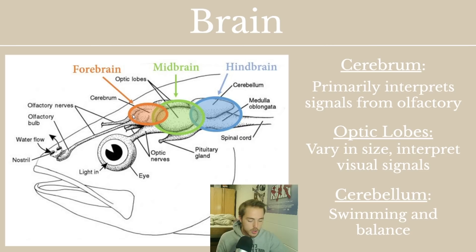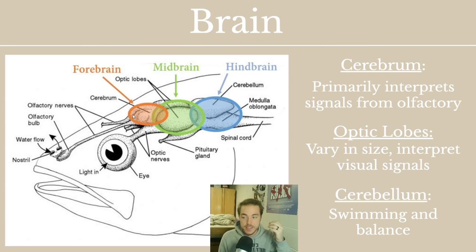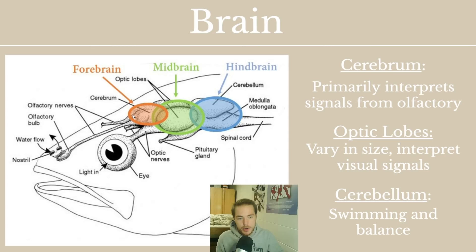This is a common theme with sensory that you need to understand. When you talk about sensing things — smell, sight, taste — there is an organ receiving the signal, and then that signal is put into a form the brain can understand and interpret. The eye just takes in light, and the brain interprets what sight is. Sight is not necessarily done in the eye; signals are taken in by the eye, but the brain determines what it is seeing. Similarly, the olfactory nerves and olfactory bulb take in the chemical sense from the water, and the cerebrum receives and interprets that signal.